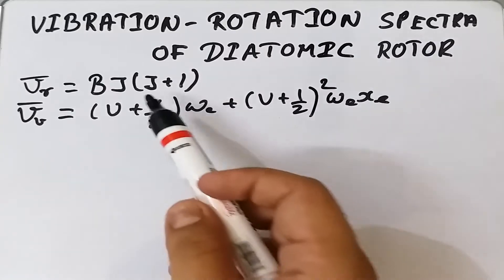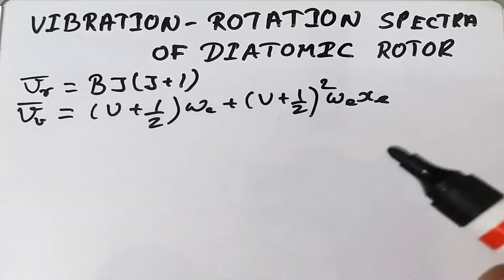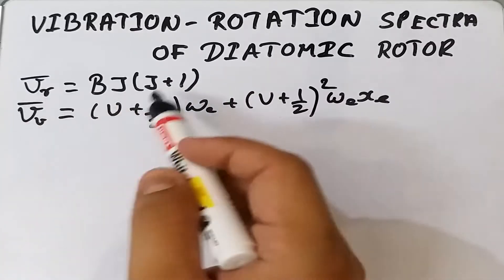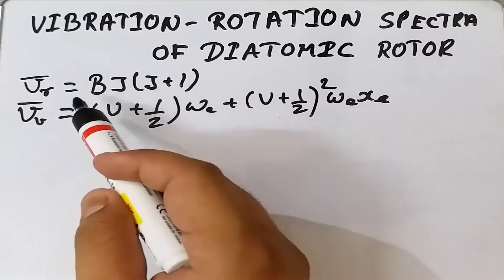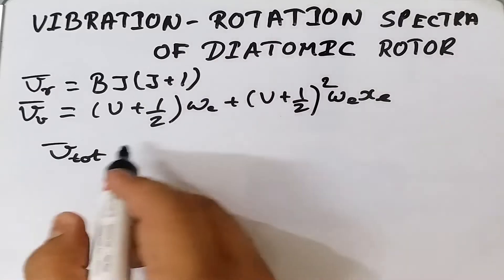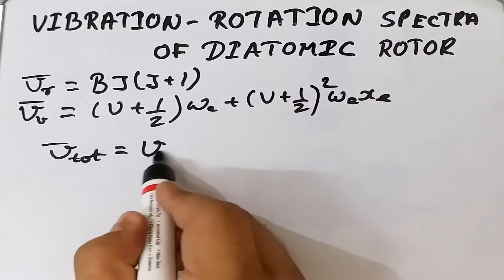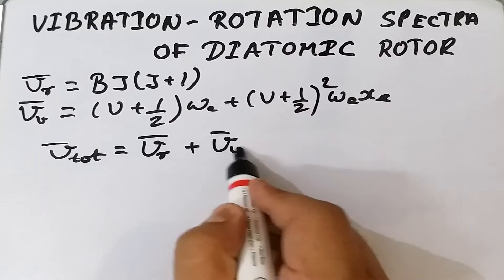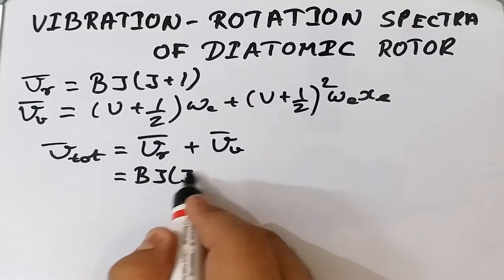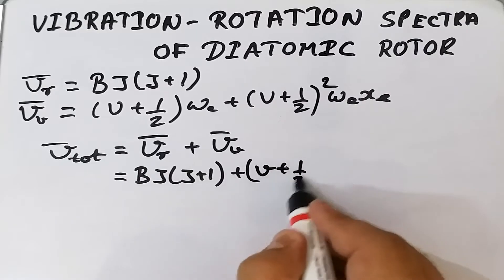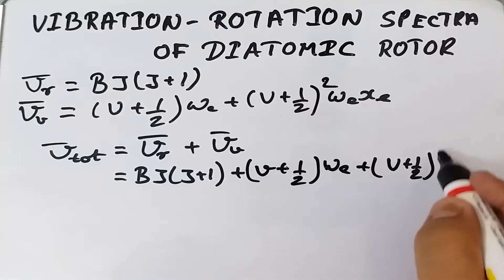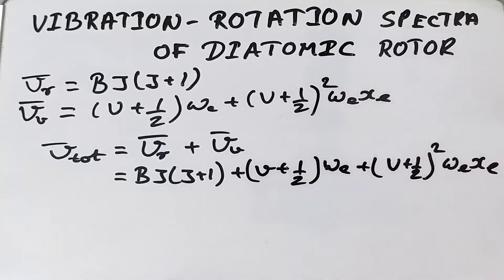Here v is the vibrational quantum number, and values of J and v run 0, 1, 2, and so on. For vibrational-rotational spectra, both rotational and vibrational transitions are present and independent. So the total energy μ_total equals the rotational contribution plus the vibrational contribution: BJ(J+1) + (v + 1/2)ωe + (v + 1/2)² ωe·xe.